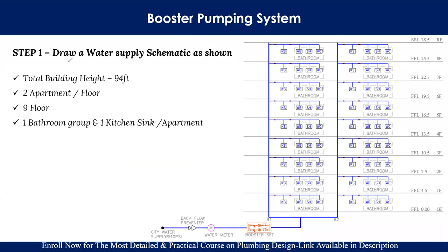The first step is to draw a schematic based on the given data: building height is 94 feet, two apartments per floor, nine-floor building, one bathroom and one kitchen sink per apartment. As you can see in this schematic, we have a pressure booster set with water supply coming from the municipality. It is divided into two risers — riser one and riser two — for the two apartments per floor. Each apartment has one kitchen sink and one bathroom group containing a wash basin, shower, and WC. From the schematic, the most remote fixture — the farthest from the booster set — is the WC.